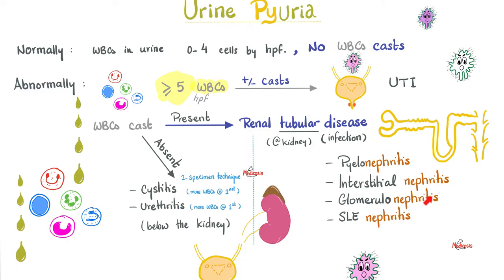But if I have white blood cells in the urine with no casts, it's coming from something below the kidney — maybe the bladder or the urethra. How can I tell the difference? Obtain two specimens of urine. If you find more white blood cells in the first sample, it means it's coming from the urethra, because the urethra is closer to the outside world. But if you find more white blood cells in the second sample, it means it's coming from a deeper structure — the bladder.